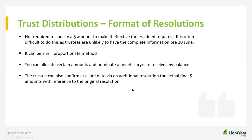Are specific dollar amounts required in resolutions for nominated beneficiaries? No — unless the deed requires this. The problem with dollars is it's often very difficult for trustees to specify exact amounts pre-30 June because the records may not be finalised. It's often best to use the proportionate method or percentages. You can name dollar amounts, use percentages, or do a mix of both — allocating certain amounts and nominating a beneficiary to receive any balance. The trustee can also confirm final dollar amounts later via an additional resolution referencing back to the original pre-30 June resolution.